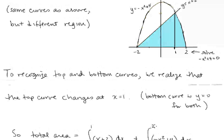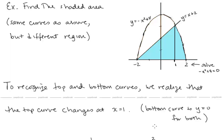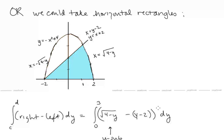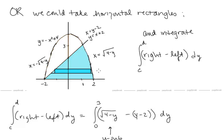We mentioned earlier the idea of taking horizontal rectangles and measuring distance from right to left. For this same region, instead of top and bottom curves, we talk about a right curve and a left curve. The horizontal distance at y_i would be radical (4 minus y_i) minus (y_i minus 2). Horizontal distances are always measured right minus left — just as we had top minus bottom for vertical distances. So the height for our rectangle gives us the integral of the right function minus the left function, integrating functions of y.